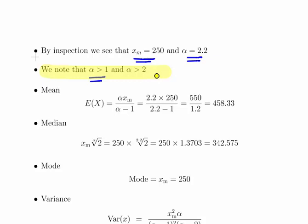The expected value, the mean, is alpha times Xm divided by alpha minus 1. That is 2.2 times 250 divided by 2.2 minus 1, which is 550 divided by 1.2, and that is 458.33.